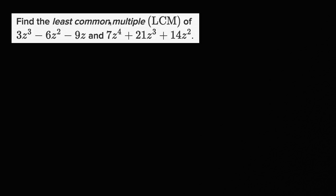They're asking us to find the least common multiple of two different polynomials. The first one is 3z³ minus 6z² minus 9z, and the second one is 7z⁴ plus 21z³ plus 14z².